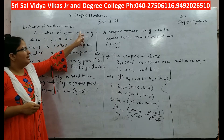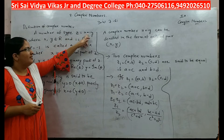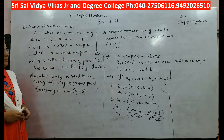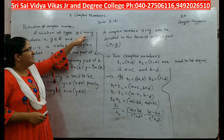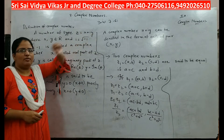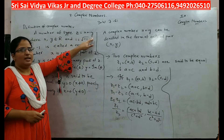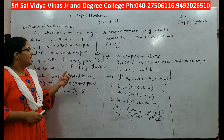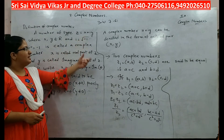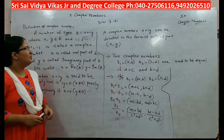If you are able to write any number in the form of x plus iy, where x and y belong to real numbers, then it is called a complex number. Here x is called the real part of z, and y is called the imaginary part of z. A complex number is said to be purely real...